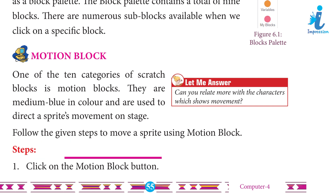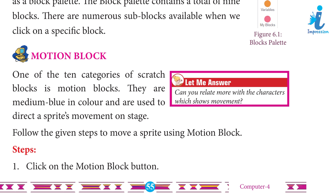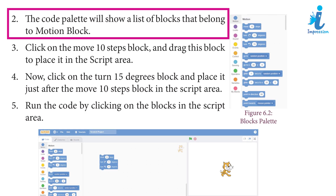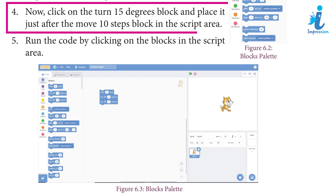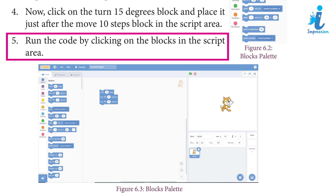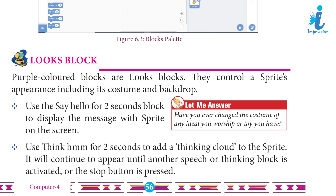Step 1: Click on the Motion Block button. Step 2: The code palette will show a list of blocks that belong to the motion block. Step 3: Click on the 'Move 10 Steps' block and drag it to place it in the script area. Step 4: Click on the 'Turn 15 Degrees' block and place it just after the 'Move 10 Steps' block in the script area. Step 5: Run the code by clicking on the blocks in the script area.